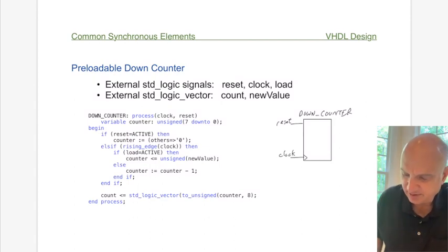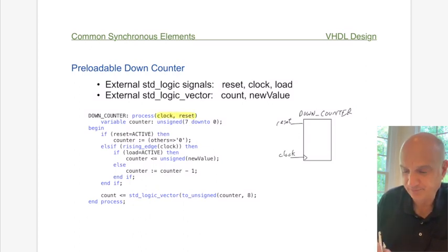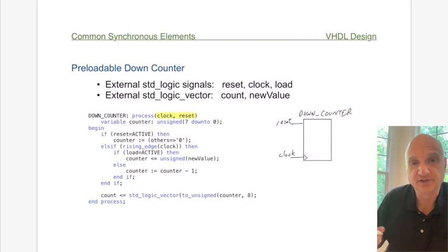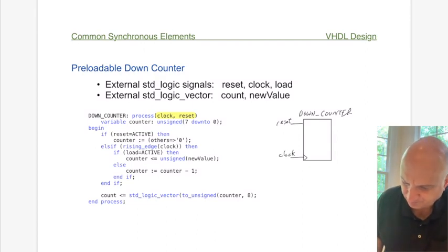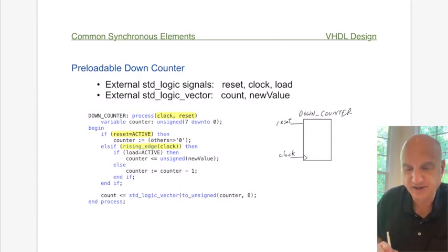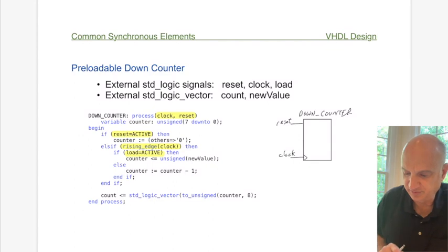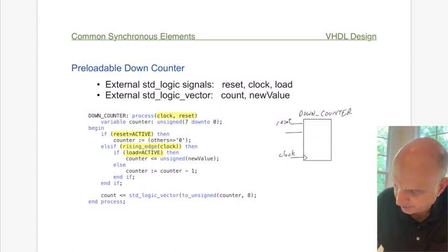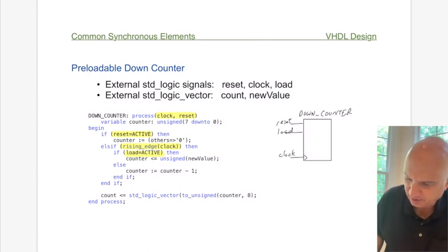Give processes reasonably good names so it's easy to understand what's going on. For example, if this down counter were being used to create a delay, you could call it 'delay_count' or something more specific. Now, you can't just look at the sensitivity list to determine inputs and outputs. The sensitivity list is strictly for signals that trigger the process — not all inputs appear there.